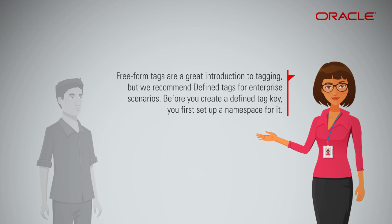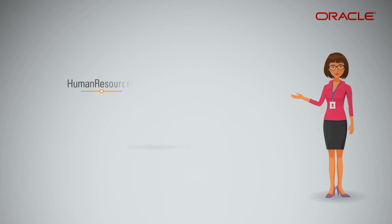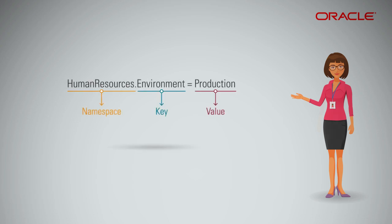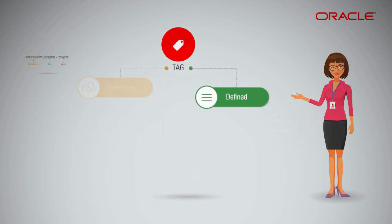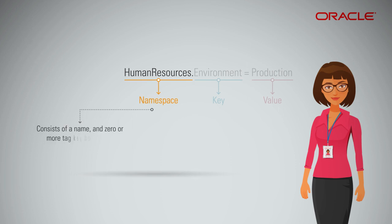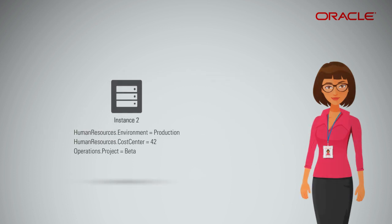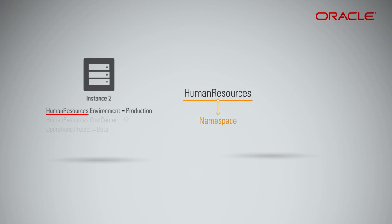Before you create a defined tag key, you first set up a namespace for it. The namespace is like a container for a set of defined tags. Unlike freeform tags, defined tags support policies — the namespace is the entity to which you apply policies. A namespace consists of a name and zero or more tag key definitions. Tag namespaces are not case sensitive and must be unique across the tenancy. In the example, 'human resources' is the namespace, 'environment' is the tag key, and 'production' is the tag value.